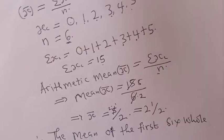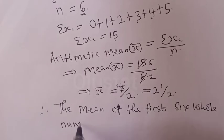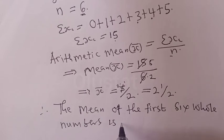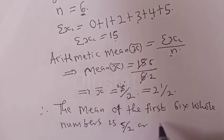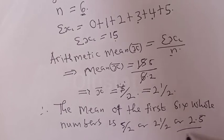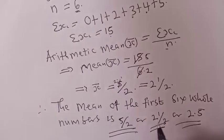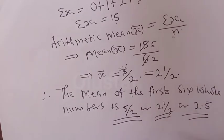The mean of the first six whole numbers is 5 over 2, or 2 and 1 over 2, or 2.5. Thank you so much. If you've enjoyed the class, please don't forget to like, share, comment and subscribe.